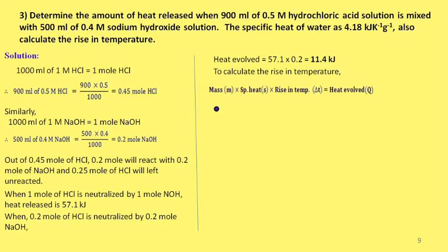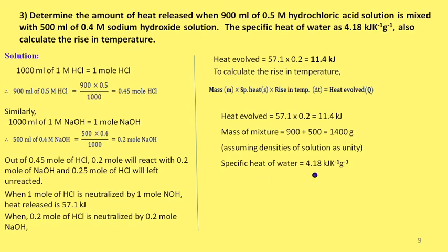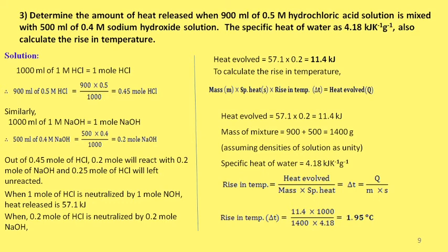To calculate the rise in temperature, we use: heat evolved = mass × specific heat × ΔT. Heat evolved = 11.4 kJ; mass of mixture = 900 + 500 = 1400 g (assuming density = 1); specific heat of water = 4.18 J/g·°C. Therefore rise in temperature = 11.4 kJ / (1400 × 4.18 J) = 1.95°C. So heat evolved is 11.4 kJ and temperature rise is 1.95°C.